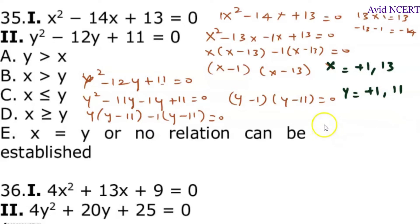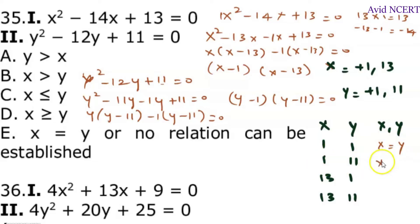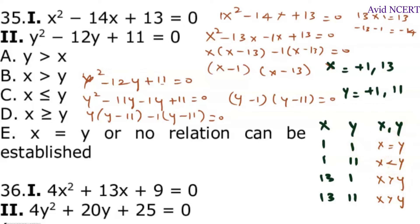Now finding the table for x, y, and relationship between x and y. When x is 1 and y is 1, x equals y. When x is 1 and y is 11, x is less than y. When x is 13 and y is 1, x is greater than y. When x is 13 and y is 11, x is greater than y. Since we have all these mixed results, the answer is that no relationship can be established between x and y.